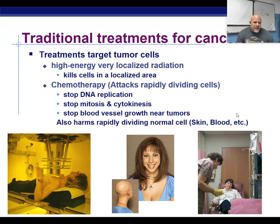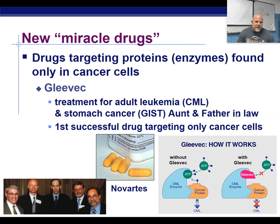Traditional treatments for cancer have included radiation and chemotherapy, and both of those are improving all the time. In the past, general chemotherapy would always just attack any fast-dividing cells — that would include your skin, digestive tract, hair, fingernails, and blood cells. So people who were doing chemo often became anemic, lost their hair, their skin got real thin, and they'd have issues with their digestive tract, feeling nausea a lot.